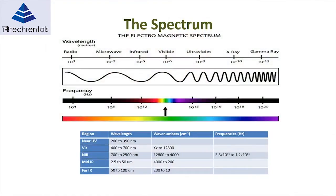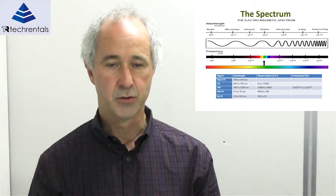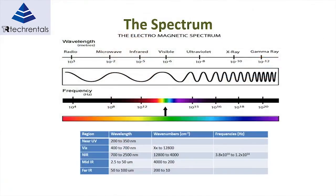What is NIR or MIR spectroscopy? It uses the electromagnetic spectrum between wavelengths of about 200 nanometres up to 2.5 micrometres. You can break it down into five components: 200–350 nm is the near UV; 400–700 nm is the visible spectrum; 700–2,500 nm is NIR; and 2.5 up to 100 micrometres covers mid-IR and far-IR.